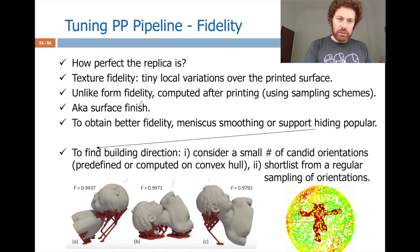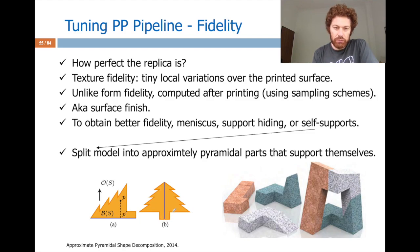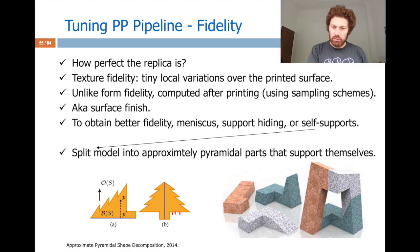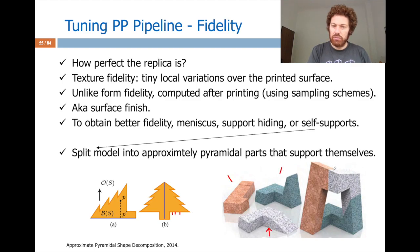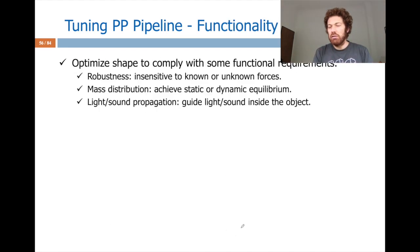The last criterion in process planning pipeline tuning is functionality — optimizing shape to comply with requirements such as robustness, stability, balance, and light or sound propagation. For robustness, one work simulates the falling effect of a digital model to find vulnerable points, giving a probability of failure or breaking at every vertex and the location of common failure points.